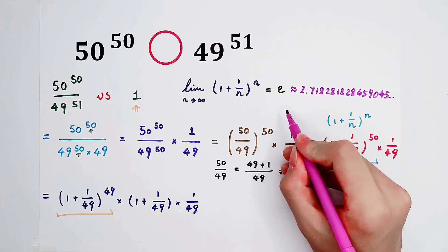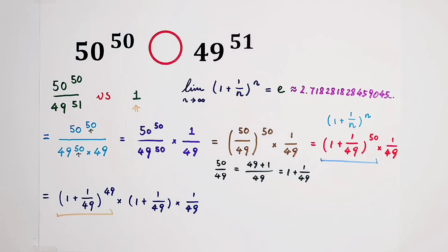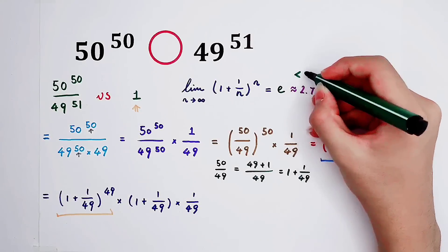Why? Please have a look. E is approximately equal to 2.718. It is, of course, smaller than 3. That's the only thing which is important. It is smaller than 3.